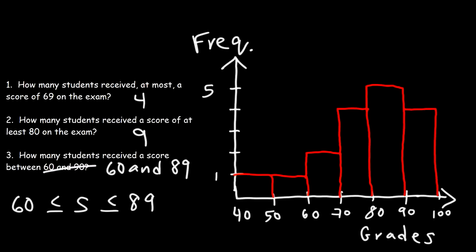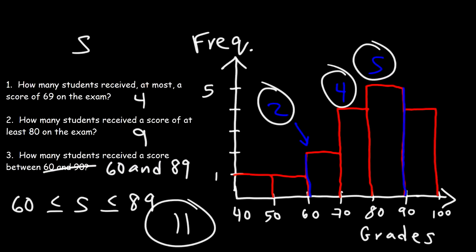So our starting point is here, 60, and our ending point is here, 89. So between 60 and 69, there were two students who received a score in that range. Between 70 and 79, there were four students. And between 80 and 89, there were five. So we've got to add up two plus four, which is six, plus five, that's 11. So 11 students received a score between 60 and 89, inclusive.